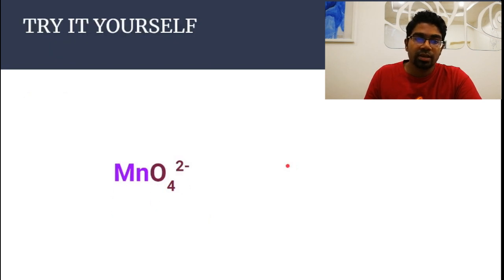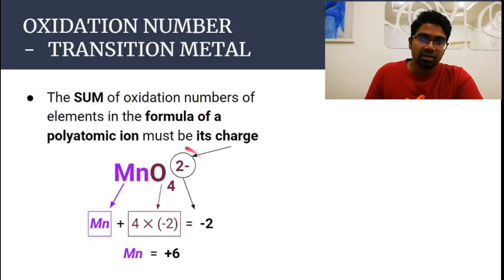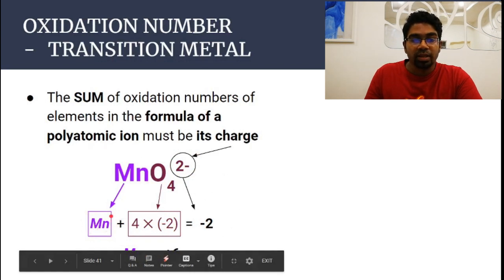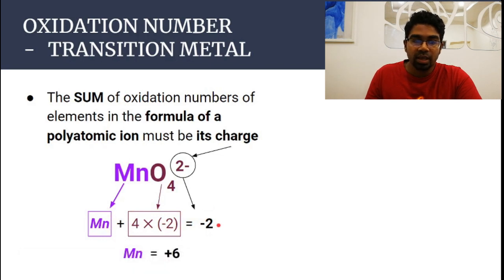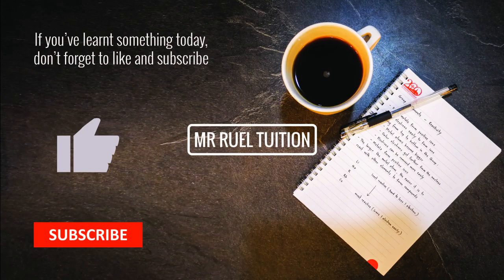Try this different ion — the manganate ion (MnO₄²⁻). The sum must equal minus two: four times minus two plus the oxidation number of manganese equals minus two. Working this out, the oxidation number of manganese is plus six.